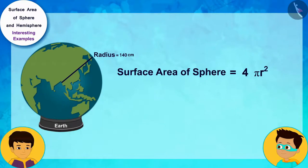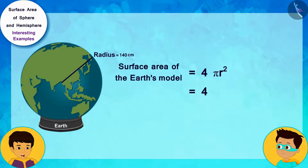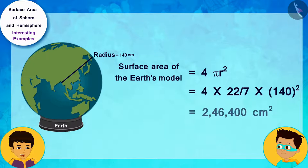Okay, now it's my turn. I will solve it in this way by writing the radius of the model of the earth, 140 centimeters in the formula for the surface area of the sphere.